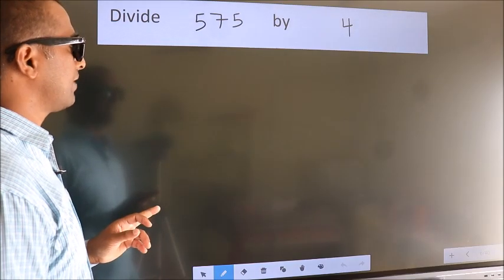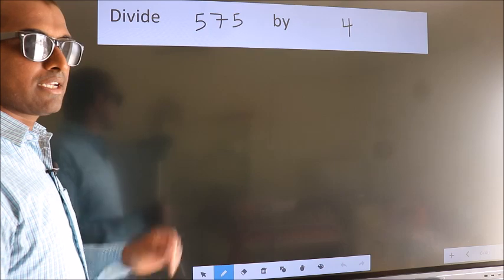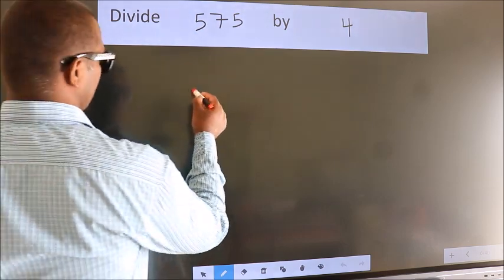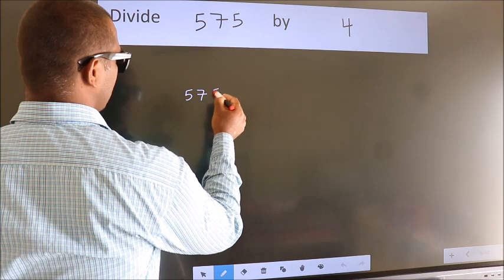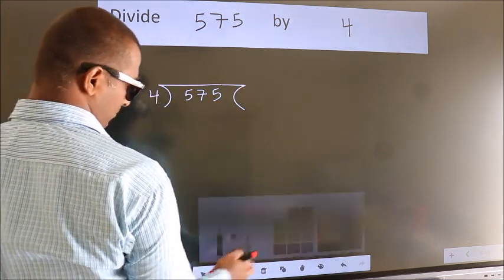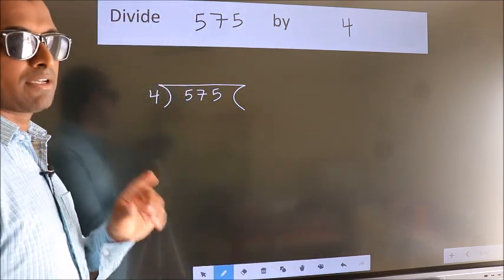Divide 575 by 4. To do this division, we should frame it in this way. 575 here, 4 here. This is step 1.